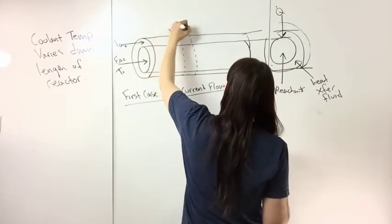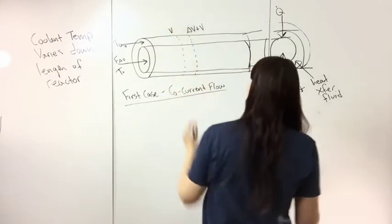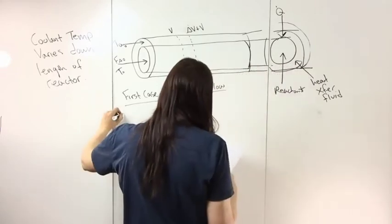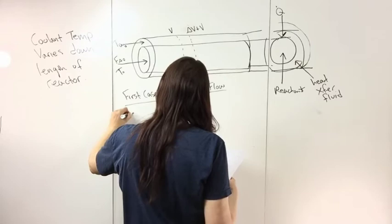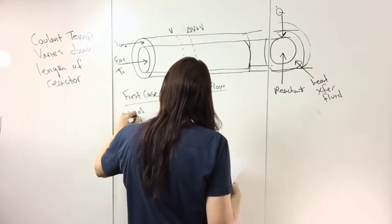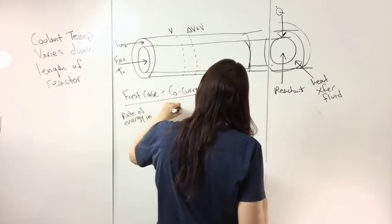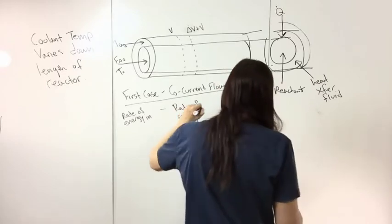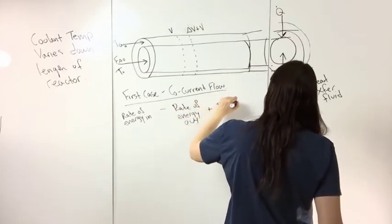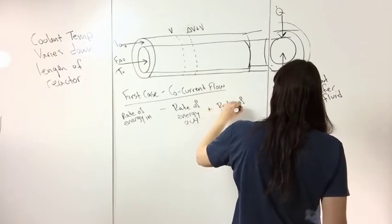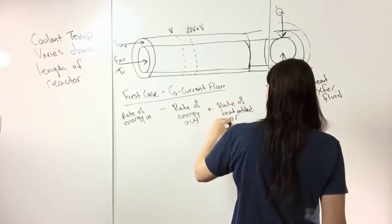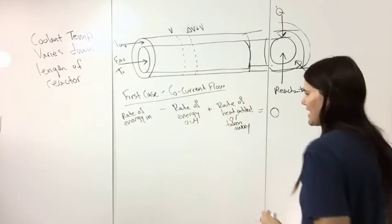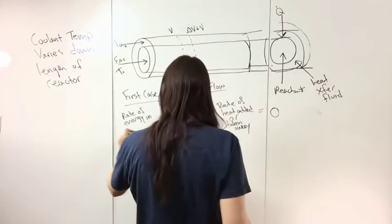This is V and this is delta V plus V. We want to do an energy balance across this volume. Rate of energy in minus rate of energy out plus rate of heat added or taken away, and we're going to assume this is steady state.